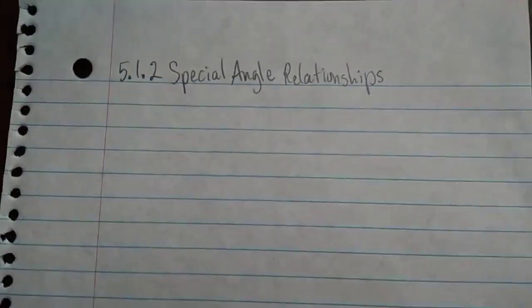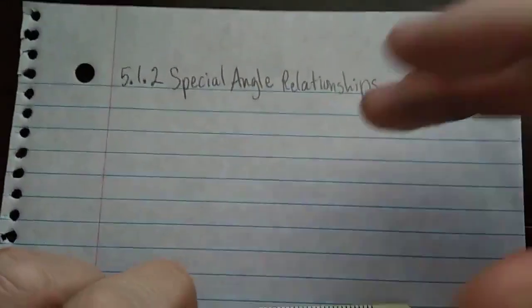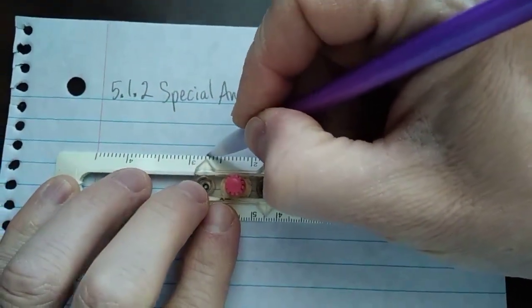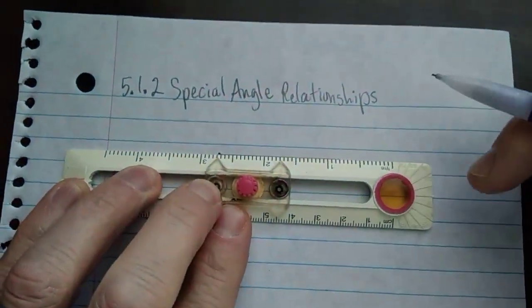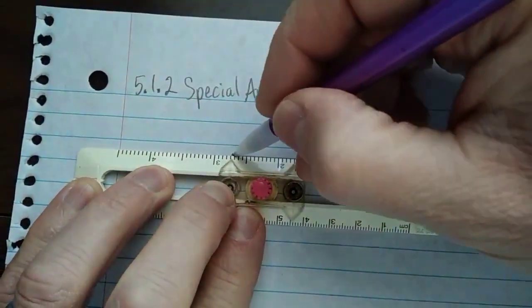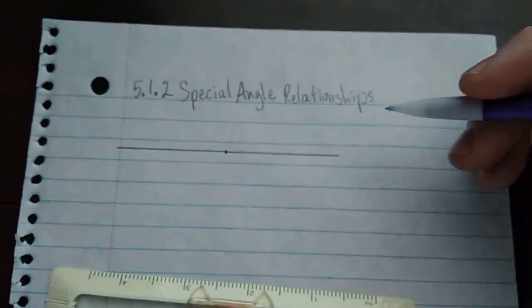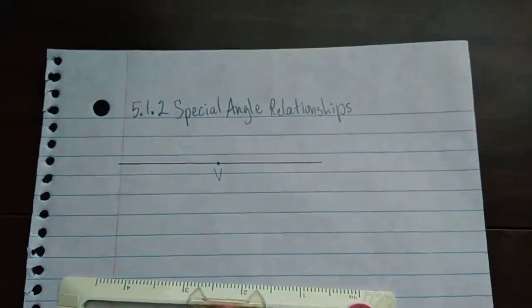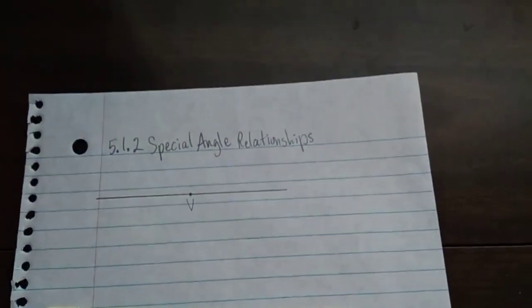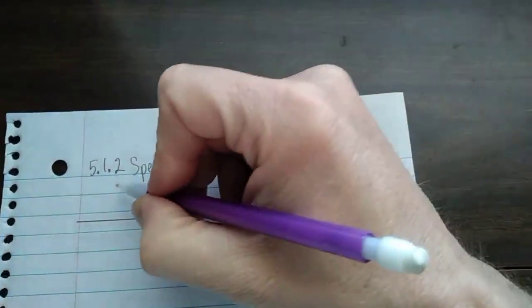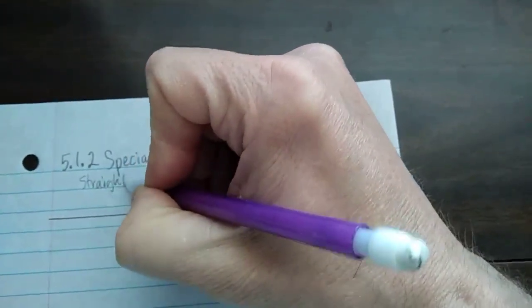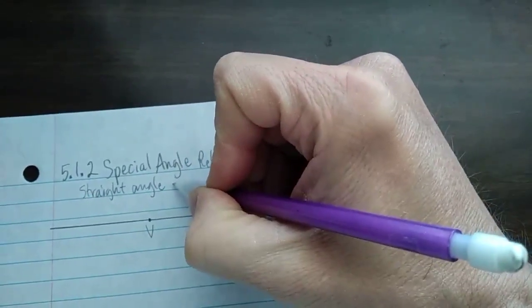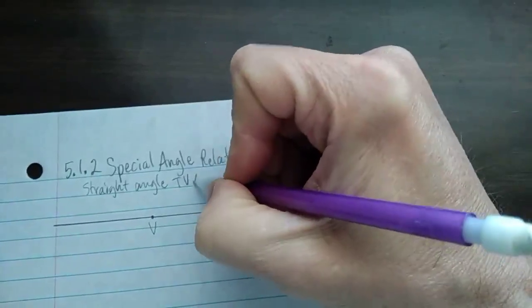So special angle relationships, we're going to start with a straight angle. It's going to look a lot like a straight line. So if this is my vertex, and I go in that direction, I don't want to move it because now I need to also go in the other direction. So if I call this vertex V, let's make it angle, straight angle TVX.